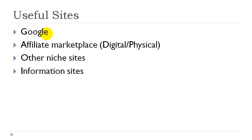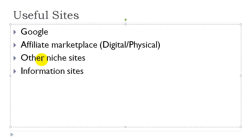Let's head back to our slide. You also want to check out other niche sites. So if you want to do a gaming niche, go out there and look for some gaming niche sites — see what they're selling and what they're doing. If their site looks like it's doing really well, reverse engineer it. Model off them and see how you can actually do it better than them. That's just another tip.